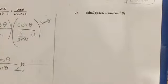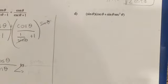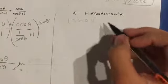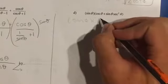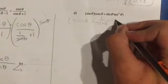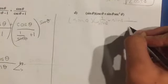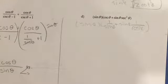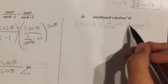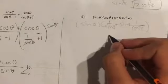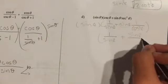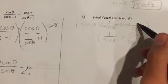Okay, now here is D. We have sine theta times (cosecant theta plus sine theta secant squared theta). First thing we're going to do is rewrite it with cosecant and secant as sine and cosine, and it is rewritten as sine theta times (1 over sine theta plus sine theta times 1 over cosine squared theta).